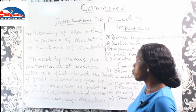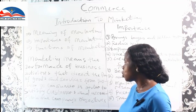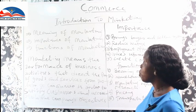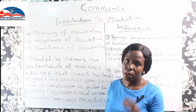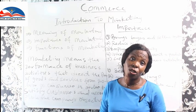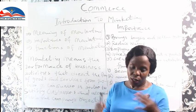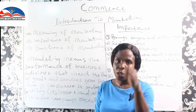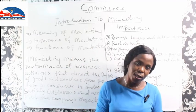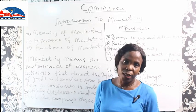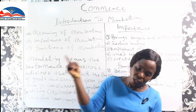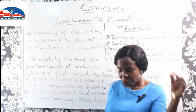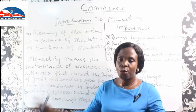Marketing directs the flow of goods and services from producer to consumer in order to satisfy consumers and accomplish the company's objective. Consumers' needs need to be satisfied and organizational objectives need to be accomplished. The organizational objectives include: to make profit — that's number one; to satisfy customers — that's number two; to compete effectively among other competitors — that's number three; to have standard goods that will stand the test of time — that's number four. And you can go on and on.